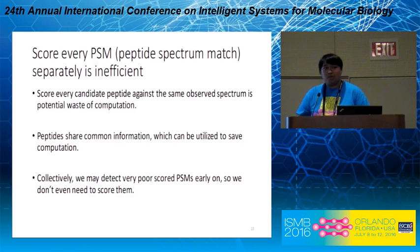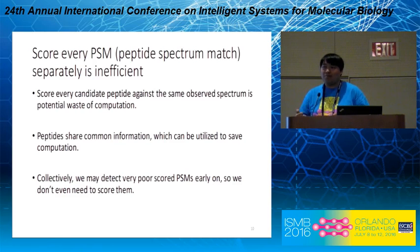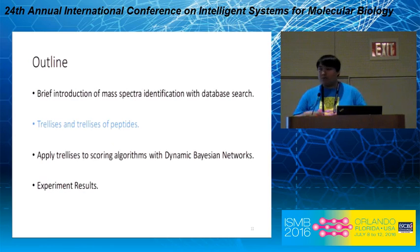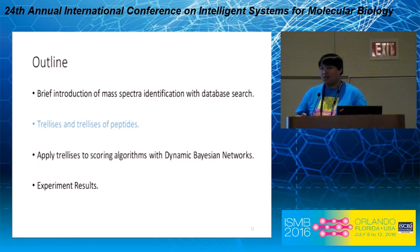Finally, if we score the PSMs collectively, we may detect very poorly scored PSMs early on during the scoring procedure so that we can discard them and make the scoring even more efficient. Our proposed solution is to use the trellis structure, which is capable of representing the set of candidate peptides collectively and efficiently, so that if you feed such a structure to the scoring algorithms, they will be able to score the candidate peptides collectively and efficiently as well.